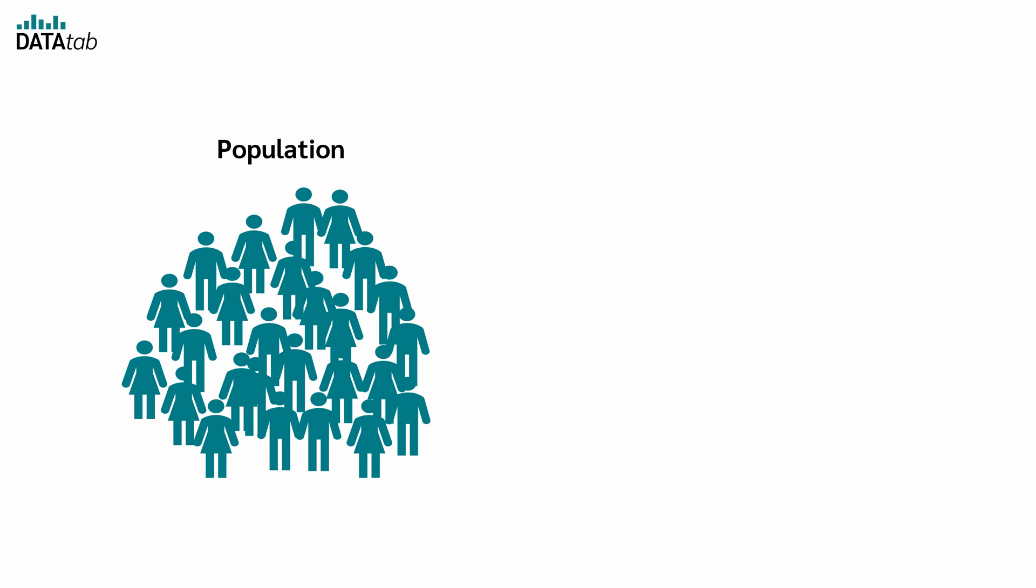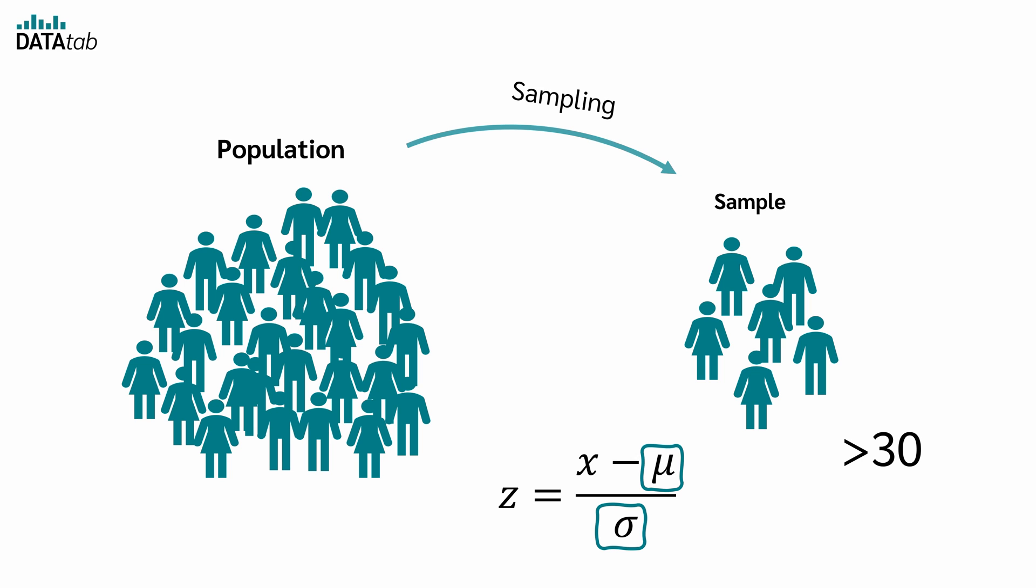Fortunately, there is an alternative assumption. Although the z-distribution is defined for normally distributed populations, the central limit theorem can be applied for large samples. This theorem states that the distribution of the sample approximates a normal distribution when a sample size is greater than 30. Therefore, if your sample is larger than 30, you can use the standard normal distribution as an approximation and the mean and standard deviation can be estimated using the sample.